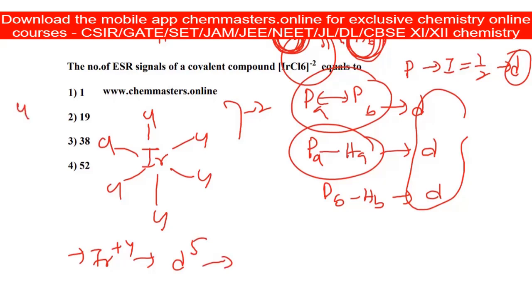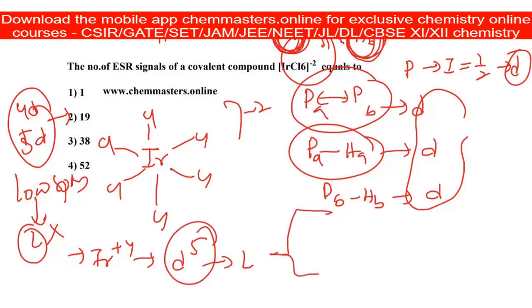We know that 4d and 5d transition metal complexes are always low spin in nature, regardless of ligand field strength. That's why in octahedral geometry, in the presence of ligand field strength, the d orbital splits into t2g and eg. So all five electrons are filled up here in t2g only. You can see one odd electron.